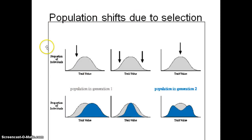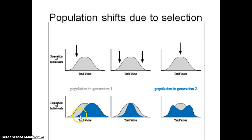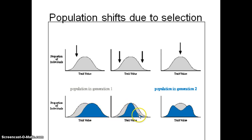What causes shifts in a population? If we normally see a bell-shaped curve with the majority in the center, a shift to the right or left is called a directional shift. When we get more heterozygous individuals and the homozygous groups decrease, that's called stabilizing selection. And when instead we push down the middle and increase both homozygous recessive and homozygous dominant individuals, that's called disruptive selection.